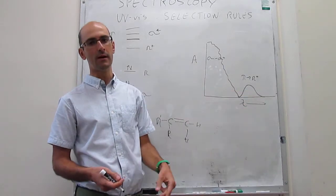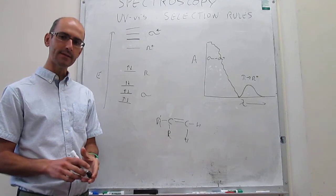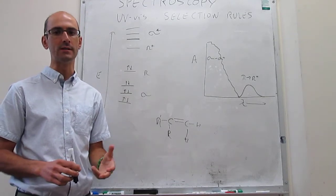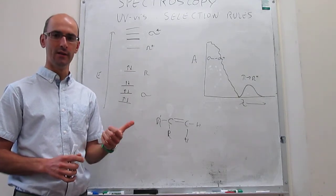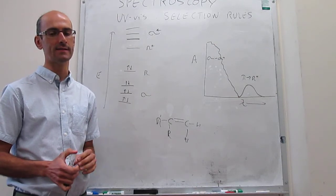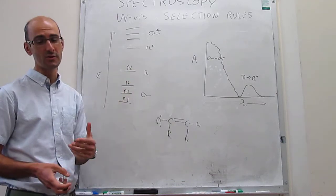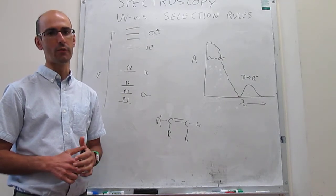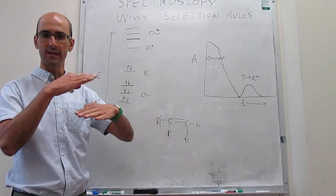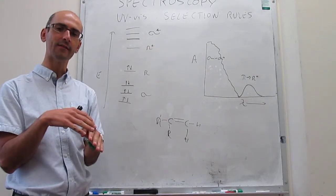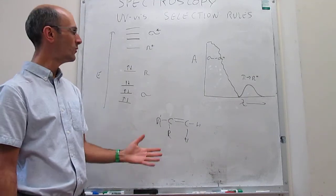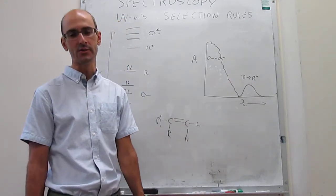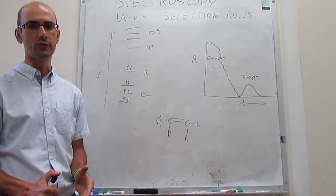This might seem limiting because some molecules don't have pi electrons, but for the life sciences we can cover our bases quite well. For proteins, there are three amino acids that have aromatic pi clouds: tryptophan, tyrosine, and phenylalanine. Those three have aromatic side chains and will have pi-to-pi star transitions, which is what you generally study when taking UV-Vis spectra of proteins in solution. For DNA, the conjugated base pairs also have pi electrons, and you study the transitions from the pi to the pi star orbitals of those electrons. These pi-to-pi star transitions appear in a clean region of the spectrum where the solvent and cuvette do not absorb.